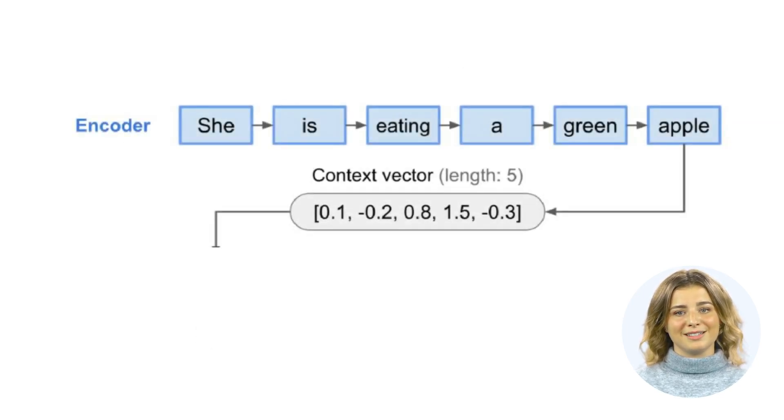The encoder processes the input sequence and condenses the information into a fixed-length vector, often referred to as the context vector. This vector, in theory, contains the essence of the input sequence. The decoder, on the other hand, takes this context vector and generates the output sequence from it.